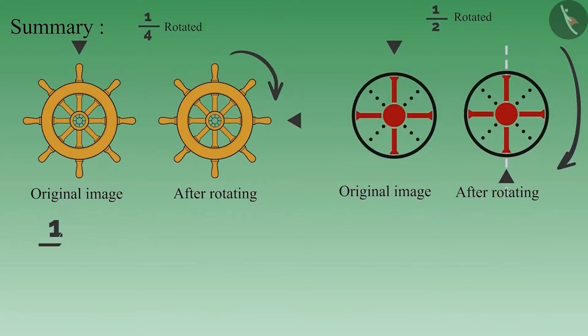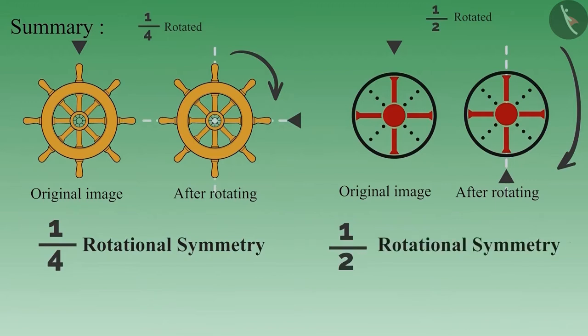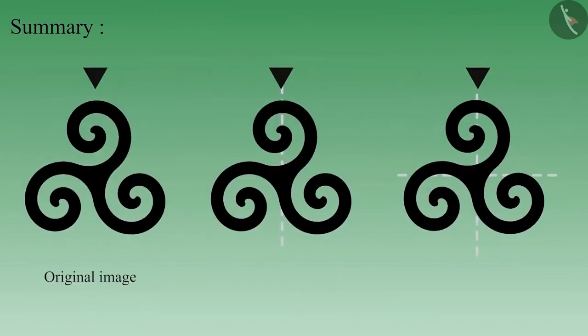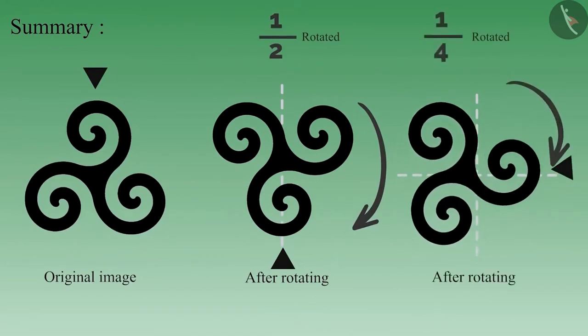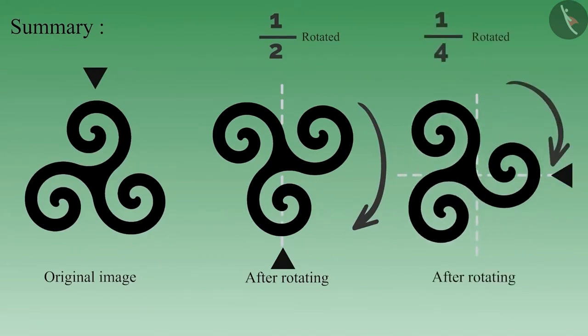Such objects have one-fourth rotational symmetry and also have half rotational symmetry. And then there are some objects which have their image changed when they are turned by half or one-fourth part.